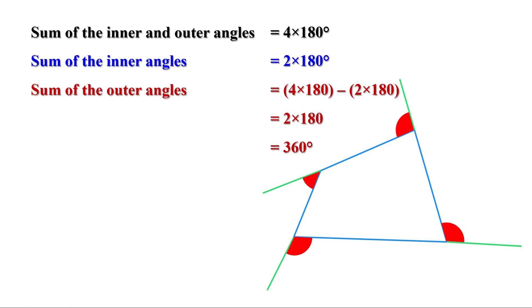Now let us find the sum of outer angles of a pentagon. There are 5 inner angles and when we extend the sides we get 5 outer angles. At each vertex, the sum of the inner and outer angle is 180 degrees, so the sum of all inner and outer angles of a pentagon is 5 × 180 degrees.